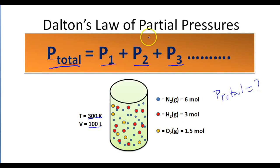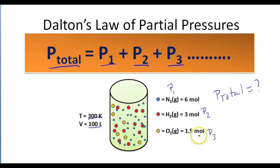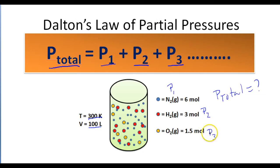In order to figure out the total pressure inside of this container, we would first have to figure out the pressure of the nitrogen gas, then the pressure exerted by the hydrogen gas, and then the pressure exerted by the oxygen gas. Once we have these three values, we can simply add them up and get the final total pressure. We can use the ideal gas law to find each of these.